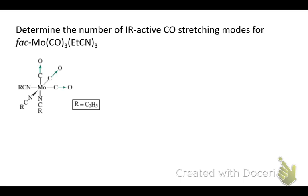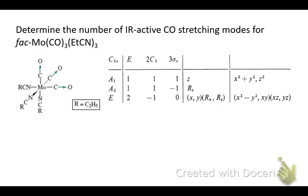Now, in order to calculate those modes, we'll once again need to identify the point group. So what is the point group of this molybdenum complex? The point group of this molybdenum complex is C3V, so we'll need the C3V character table. Here it is.